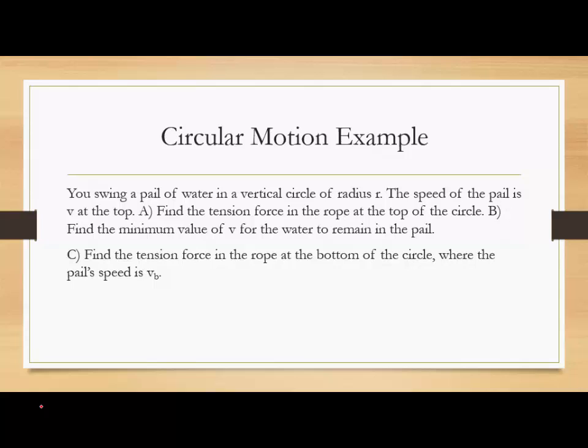Okay, so this is a conceptual example here for centripetal motion. Swinging a pail of water in a vertical circle with radius r, the speed of the pail is v at the top. So if we draw a free body for what's happening at the top of our circle, this is top. We're going to have the weight of the pail of water, and then we also have the tension force from the rope pulling it down. And then if we look at what's happening at the bottom, we have the weight of the pail going down and then the tension force in the rope actually pulling it upwards. So for part a, I'm asking to find the tension force in the rope at the top of the circle.